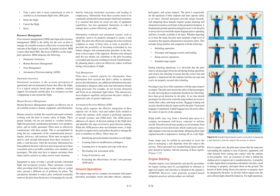Aeronautical decision-making (ADM): flying safely requires the effective integration of three separate sets of skills — stick and rudder skills needed to control the airplane, skills related to proficient operation of aircraft systems, and ADM skills. The ADM process addresses all aspects of decision-making in the flight deck and identifies the steps involved in good decision-making. While the ADM process does not eliminate errors, it helps the pilot recognize errors and enables the pilot to manage the error to minimize its effects. These steps are: identifying personal attitudes hazardous to safe flight; learning behavior modification techniques; learning how to recognize and cope with stress; developing risk assessment skills; using all resources; and evaluating the effectiveness of one's own personal ADM skills.